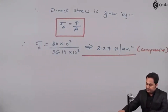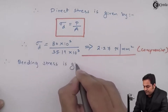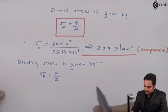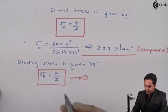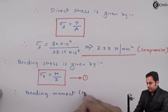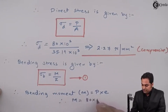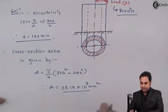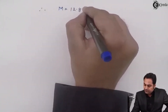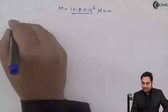Now we calculate the bending stress. The bending moment M = Load × Eccentricity = 80×10³ × 160 = 12.8×10⁶ N·mm.